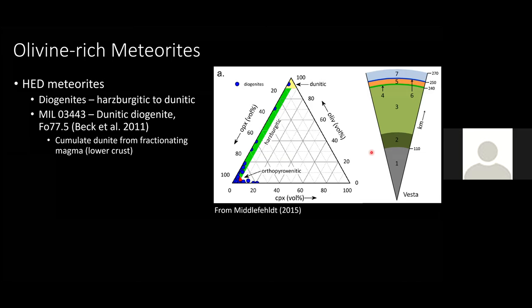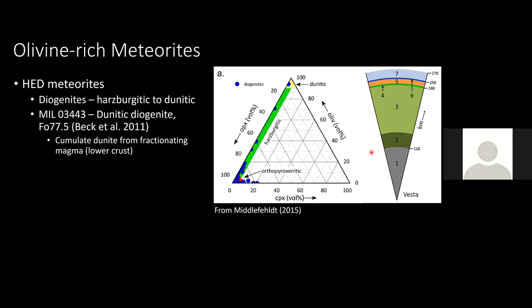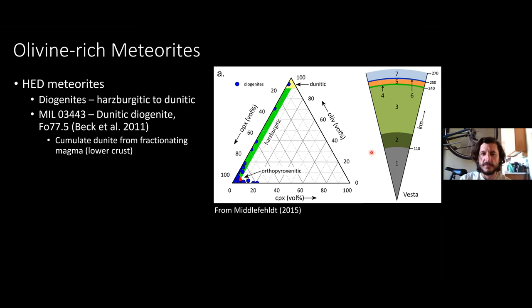Mindy notes there might be more than just that one dunitic diogenite — possibly at least one NWA diogenite that is dunitic in composition. Zoltan acknowledges this and notes they'll want to examine it, as later in the talk they'll explore how these might be related to the Vestoids.